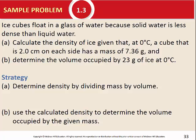We're given three numbers: temperature (zero degrees Celsius), a length (two centimeters — the side of a cube), and a mass (7.36 grams), and we're asked for density. When you see density, write the formula: density equals mass over volume. I have the mass: 7.36 grams. But I need a volume.